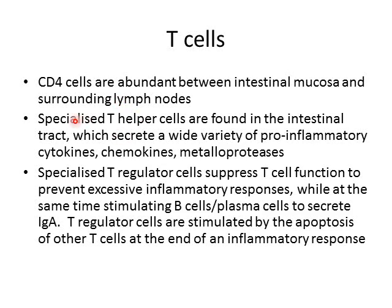We also have specialized T helper cells present only in the intestinal tract. They secrete a wide variety of pro-inflammatory cytokines, chemokines to attract neutrophils and macrophages, and metalloproteases which are enzymes that destroy cell walls. There are also T regulatory cells which suppress T cell function and suppress inflammation, while at the same time stimulating B cells and plasma cells to secrete IgA. These regulatory cells are stimulated by the death of other T cells, so as T cells kill off pathogens and die off, this calms down the inflammatory response to prevent excessive inflammation within the bowel.